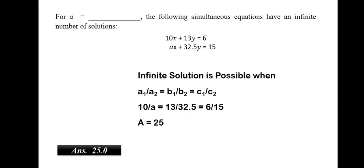For alpha, the following simultaneous equations have an infinite number of solution. So, we know that for alpha to be having infinite number of solution, it should be in the form a1 by a2 is equal to b1 by b2 which is equal to c1 by c2. So, when we solve it, we get alpha about 25.